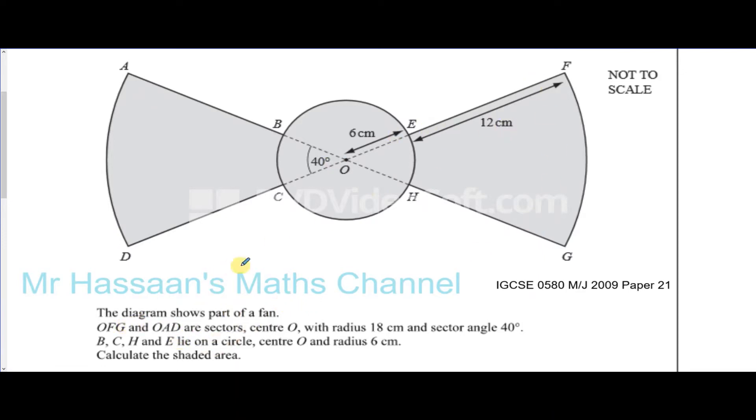OFG and OAD are sectors, center O, with radius 18 centimeters, and sector angle of 40 degrees. B, C, H, and E lie on a circle, center O, and radius 6 centimeters. Calculate the shaded area.